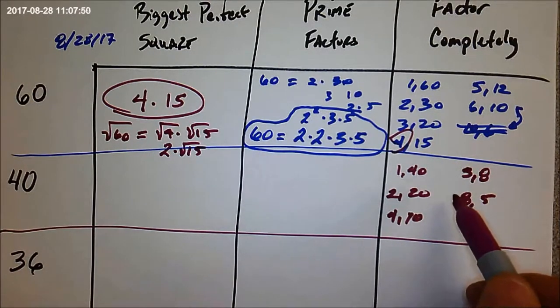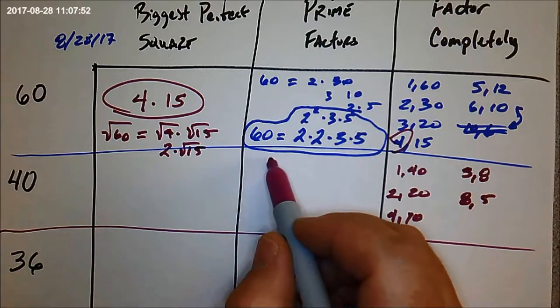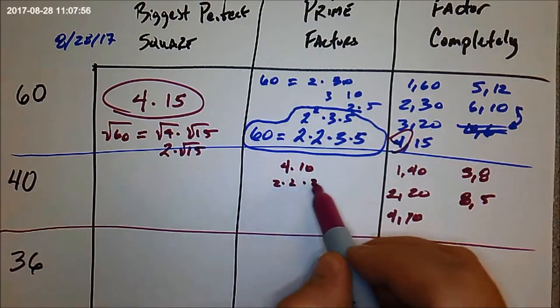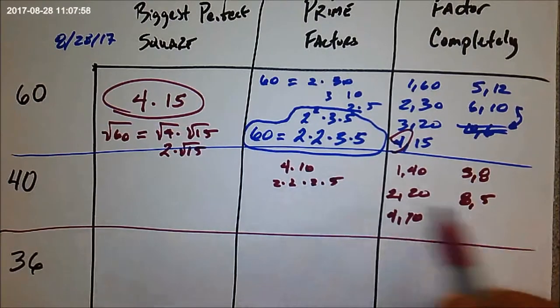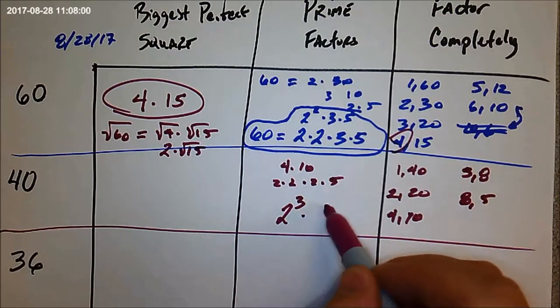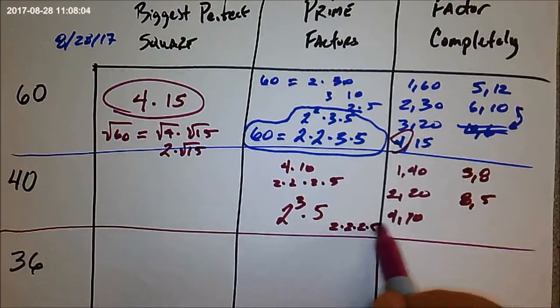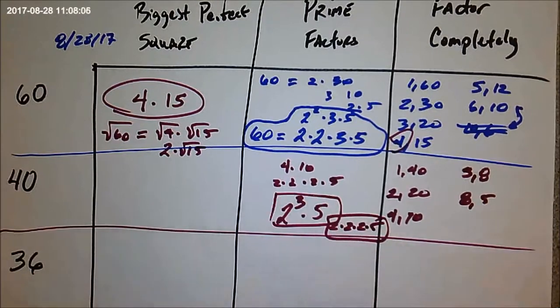The prime factorization. Well, 40 is 4 times 10, right? 4 times 10. And that's 2 times 2 times 2 times 5. It's 8 times 5. So that would be 2 cubed times 5. Or if you wanted, you could write out all three 2s like that. Either one of those, perfectly acceptable.